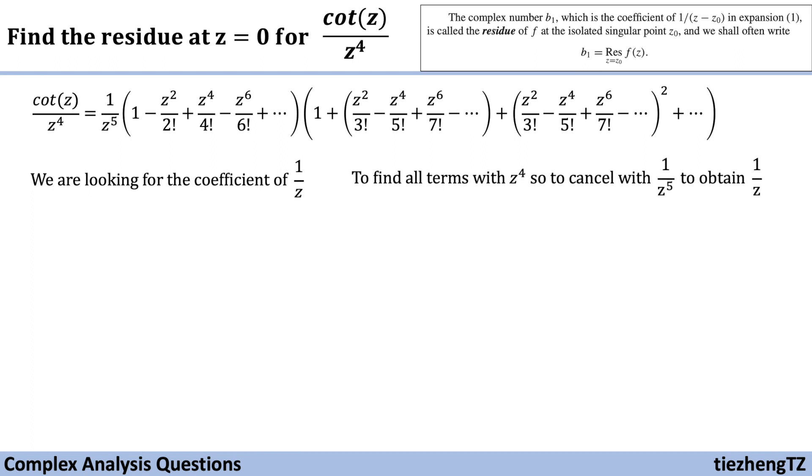Since we have 1 over z to the power of 5, we just need to find the terms with z to the power of 4 from the multiplication of the two parentheses. So the z to the power of 4 can be cancelled with 1 over z to the power of 5, so we can obtain 1 over z.